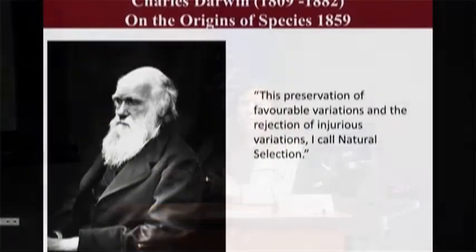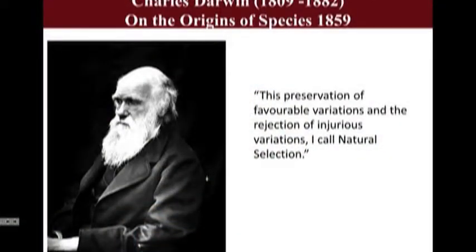What caused all this diversity? Part of it is demographic history—large population size, historic migration events, admixture—but also natural selection. As Darwin wrote in On the Origin of Species in 1859: 'This preservation of favorable variations and the rejection of injurious variations, I call natural selection.'